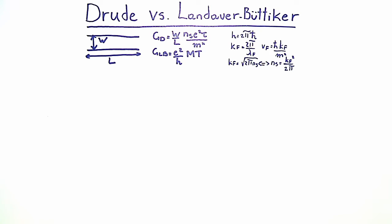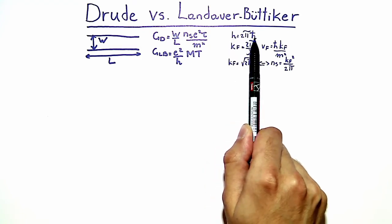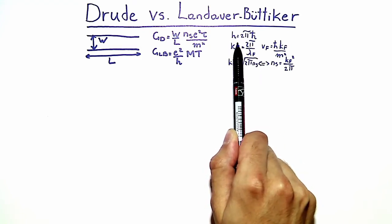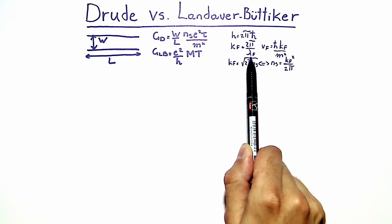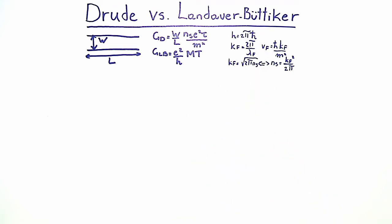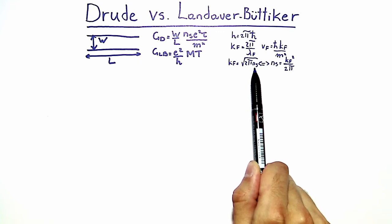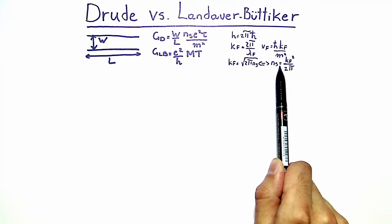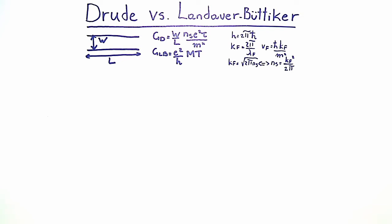Before we start, let us take a look at some useful formulas. The first expression relates Planck's quantum with the reduced Planck's quantum — they differ by a factor of 2π. The next expressions relate the Fermi wave number k_F, the Fermi wavelength λ_F, and the Fermi velocity v_F. The final expression gives the electron sheet density N_s as k_F² divided by 2π, valid in a two-dimensional system with a parabolic dispersion relation.